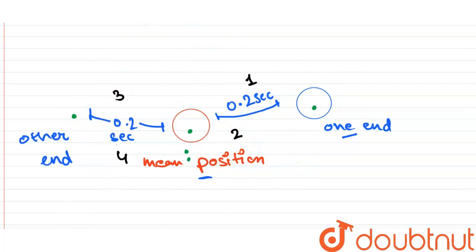We understand that the bob travels these four distinct paths to cover one oscillation. Therefore, the time period will be the time taken to cover all four portions.